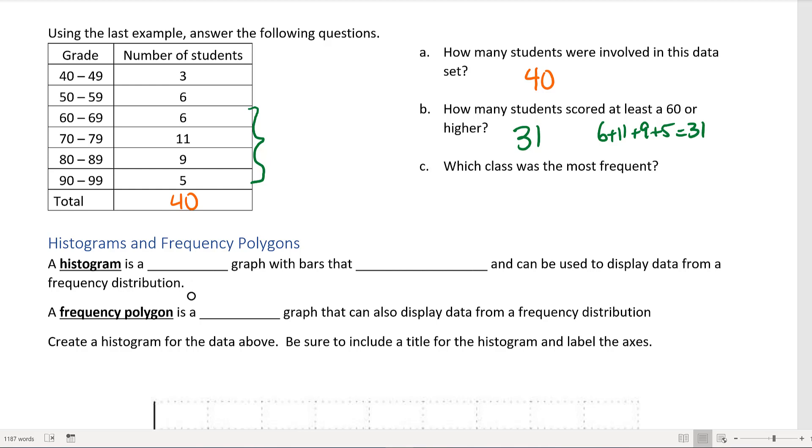Which class was the most frequent? So the most frequent grade landed in the class between 70 to 79. Having a frequency distribution actually will let us gather data off of our data points really quickly because it was really easy to see once it was organized in a frequency distribution.